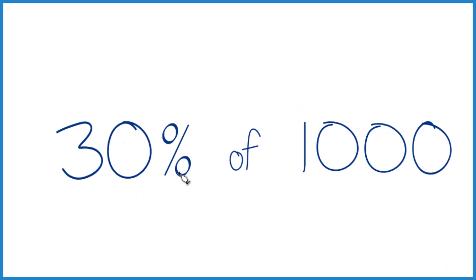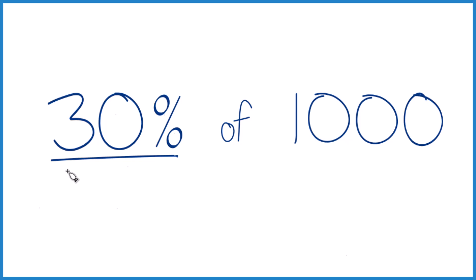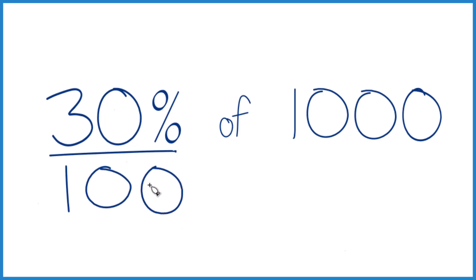I think of it this way: 30%, that's 30 per 100. So if I had just 100, that would be 30. If I had 1,000, I'm going to add another zero. Instead of 30, it's 300. So 30% of 1,000, that's 300.